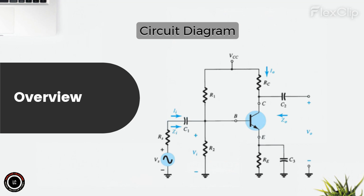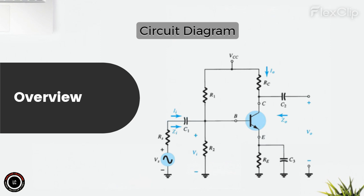DC biasing network — biasing resistors R1 and R2: apart from their role in the voltage divider, R1 and R2 establish the DC biasing point for the transistor, ensuring it operates in its linear region. Power supply — VCC: the power supply voltage provided to the collector and emitter circuits; it ensures that the transistor operates within its specified voltage range. GND serves as the reference point for the circuit's voltage levels, typically connected to the emitter of the transistor and the negative terminal of the power supply.